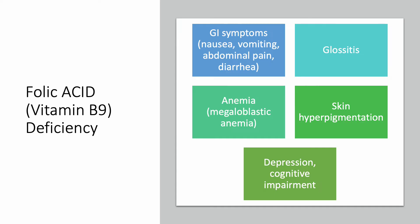Folic acid deficiency leads to many symptoms. Gastrointestinal symptoms include nausea, vomiting, abdominal pain, diarrhea, and glossitis, which is inflammation of the tongue. Anemia is called megaloblastic anemia because the red blood cells become large and nucleated — normally they don't have a nucleus. You also see this in B12 deficiency, so if you see that kind of anemia you really have to check for both B12 deficiency and folic acid deficiency.